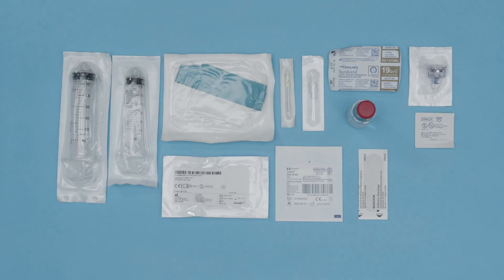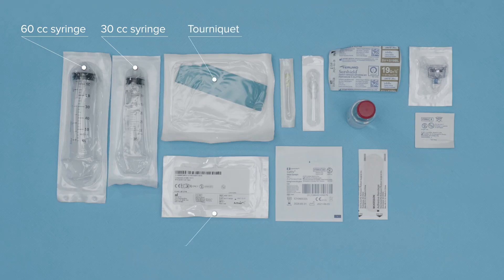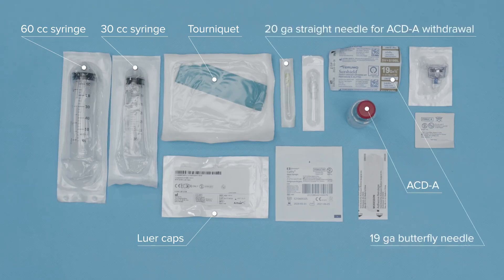The ACP Max device contains an inner and an outer tray. The outer tray has all the components necessary for your peripheral blood draw. You have two syringes to draw up to 90 cc's of peripheral blood, a tourniquet, caps to sterilely cap your product, ACDA to load on syringes for the peripheral blood draw, and what you need to bandage after the draw, including a gauze pad and a band-aid.